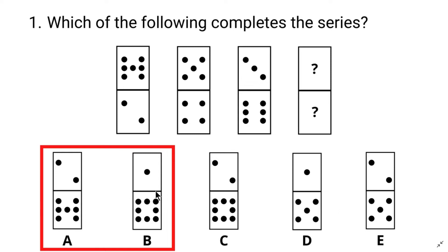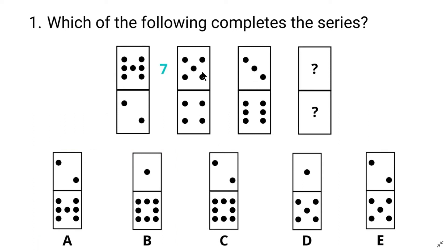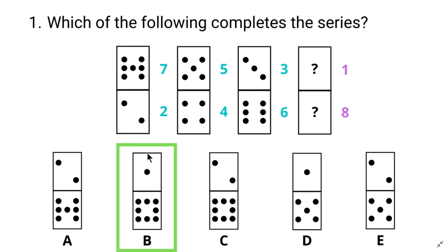Let's write it down. Looking at the top-level squares: the first image has seven dots, the second has five, the third has three — the number of dots in the top level is reducing by two, so the next should be one. In the bottom level: two, four, six — increasing by two, so the next should be eight. The correct answer is B. Keep practicing this approach and you will get much faster.